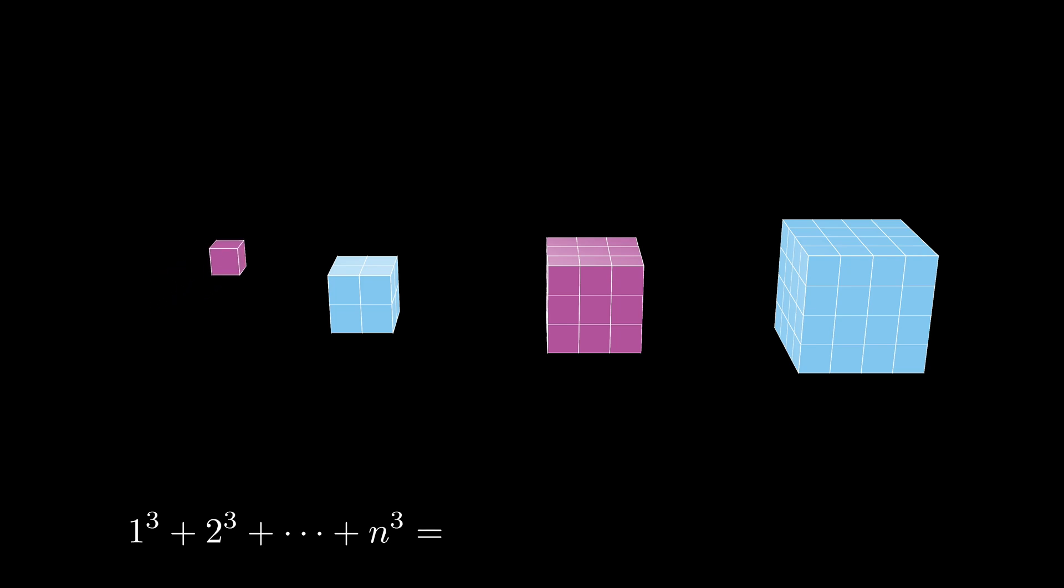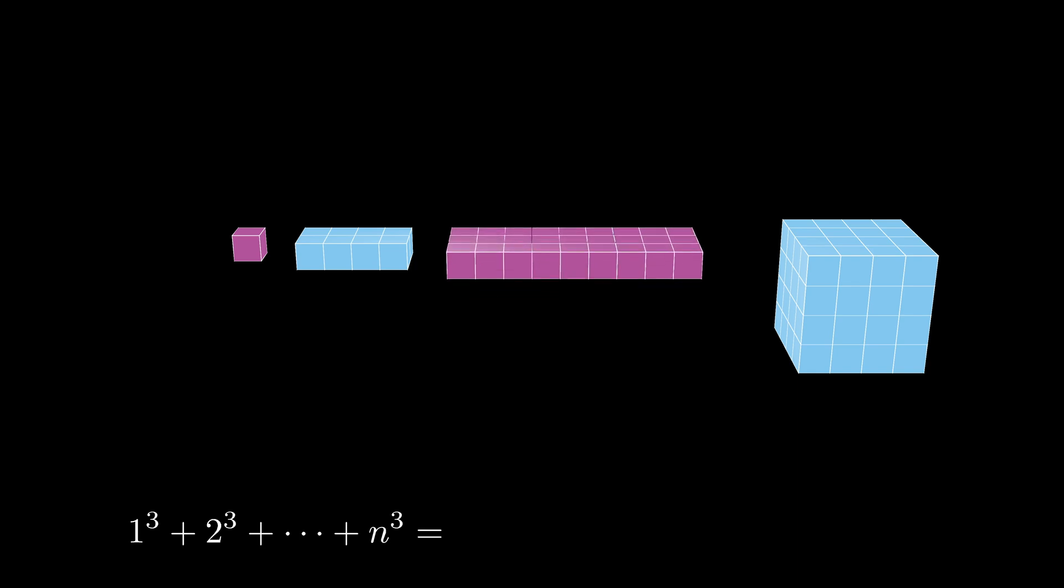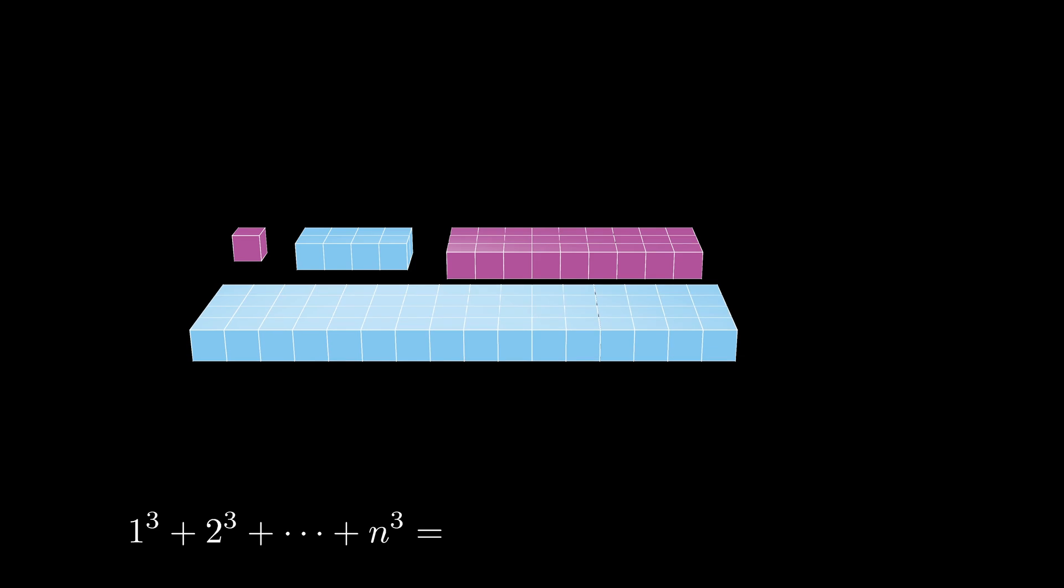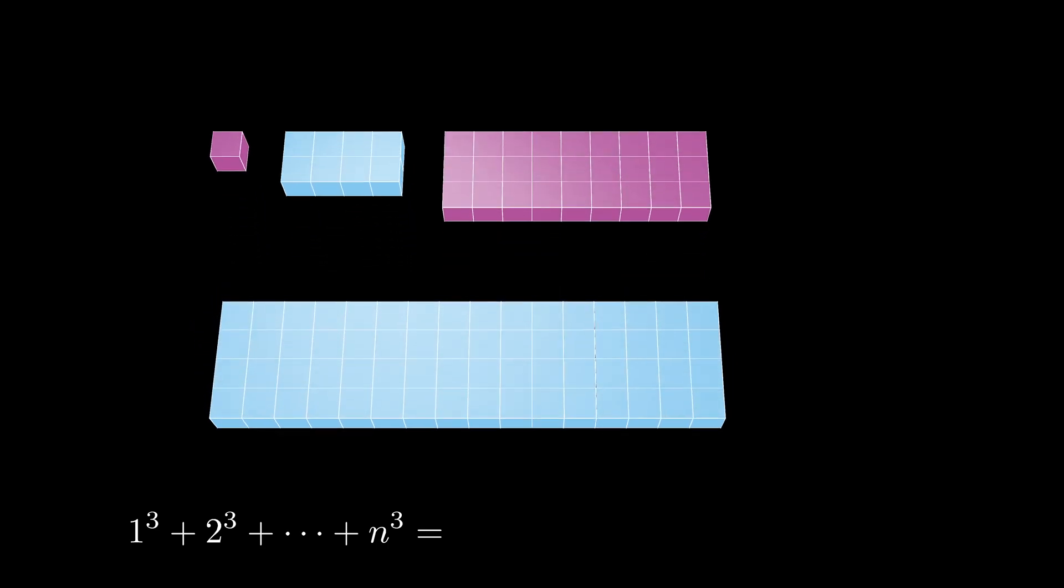Now, if we lay out each of the cubes flat, each cube forms an i by i squared rectangle. So the first cube forms a 1 by 1 rectangle, the next one a 2 by 4 rectangle, then a 3 by 9 rectangle, all the way down to the final one which forms an n by n squared rectangle.